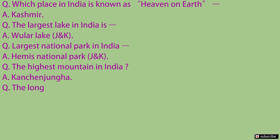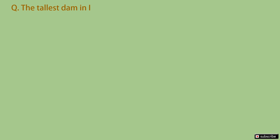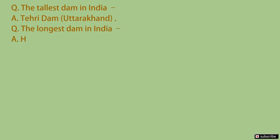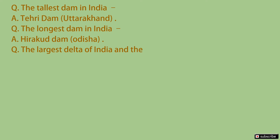The longest beach in India is Marina Beach. It's in Chennai. The tallest dam in India is Tehri dam. It's located in Uttarakhand. The longest dam in India is Hirakud dam. It's located in Odisha. The largest delta of India and the world is Sundarbans delta.